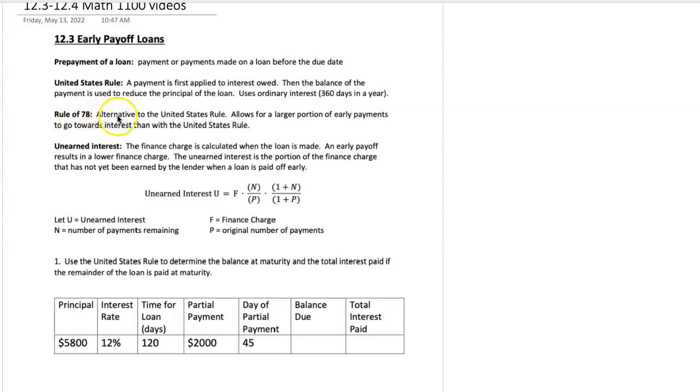The rule of 78 is just an alternative to the United States rule. The unearned interest. When you have a loan they calculate the finance charge which is also another name for the interest in the beginning to know how much interest is charged for the whole loan.